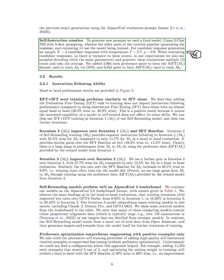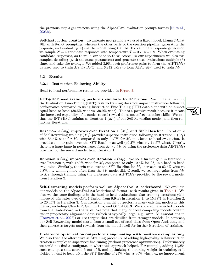To generate new prompts, we've used a fixed model — LLaMA-2-Chat 70B with 8-shot prompting — while the other parts of the creation pipeline, generating the response and evaluating it, use the model being trained. For candidate response generation, we've sampled four candidate responses with a temperature of 0.7 and a p value of 0.9. When evaluating candidate responses, we've generated these evaluations multiple times and taken the average. We've added 3,964 preference pairs to form the AIFT(M1) dataset used to train M2 via DPO, and 6,942 pairs to form AIFT(M2) used to train M3. We've found that adding the evaluation fine-tuning, EFT, task to training does not impact instruction following performance compared to using instruction fine-tuning, IFT, data alone. This is a positive result because it means the increased capability of a model to self-reward does not affect its other skills.